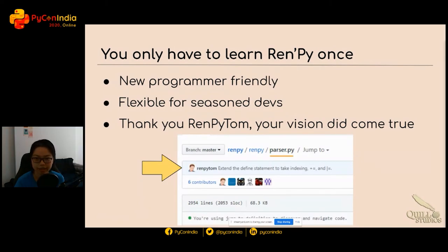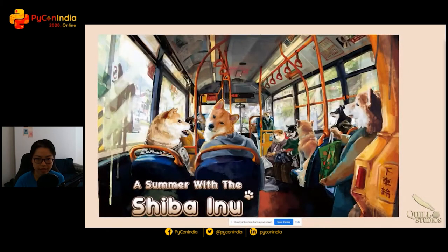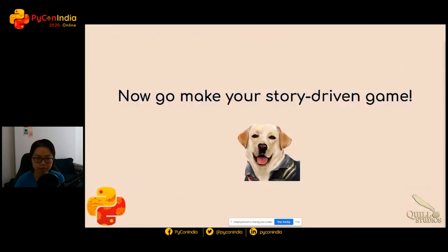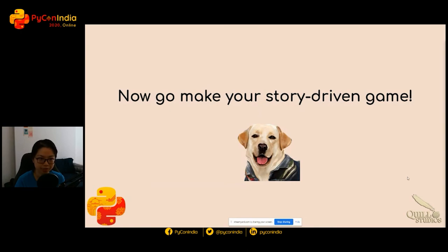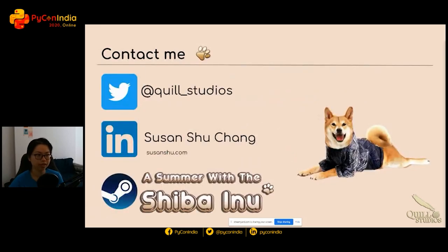If you want to check this out, you can go to the RenPy GitHub and check out the repo, as well as my game A Summer with the Shiba Inu. I encourage you to check out all the other games I mentioned as well. If you have an idea for a 2D story-driven game with choices, definitely just go download it and check it out. Thank you very much for coming to one of the last talks of the day.